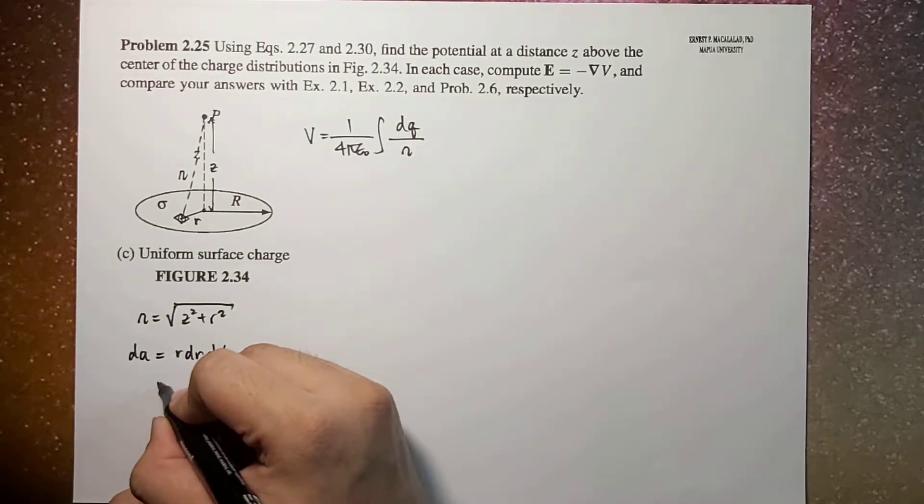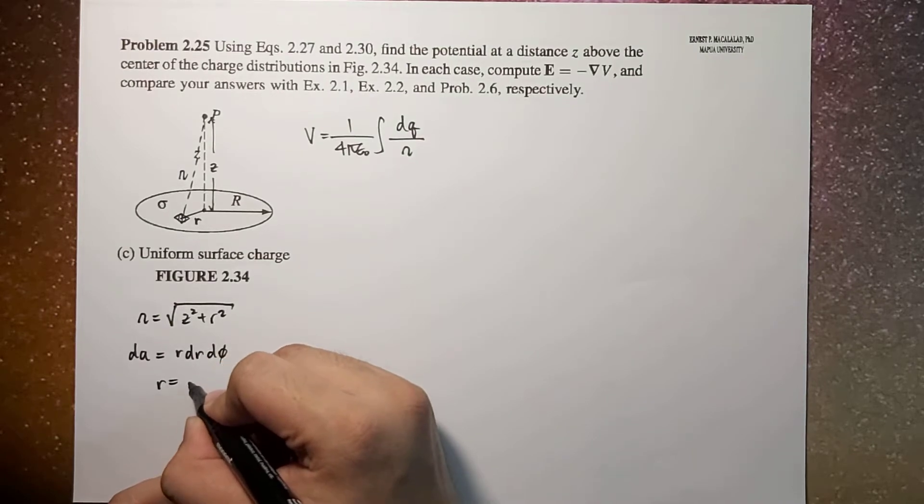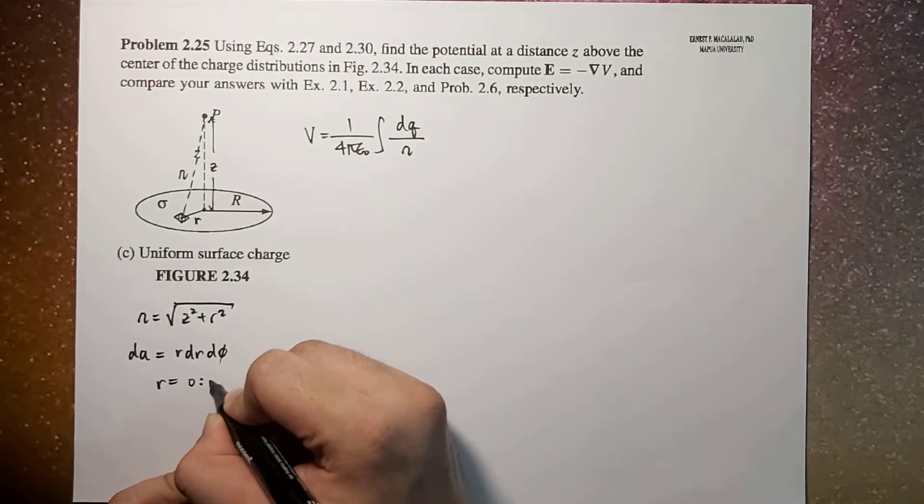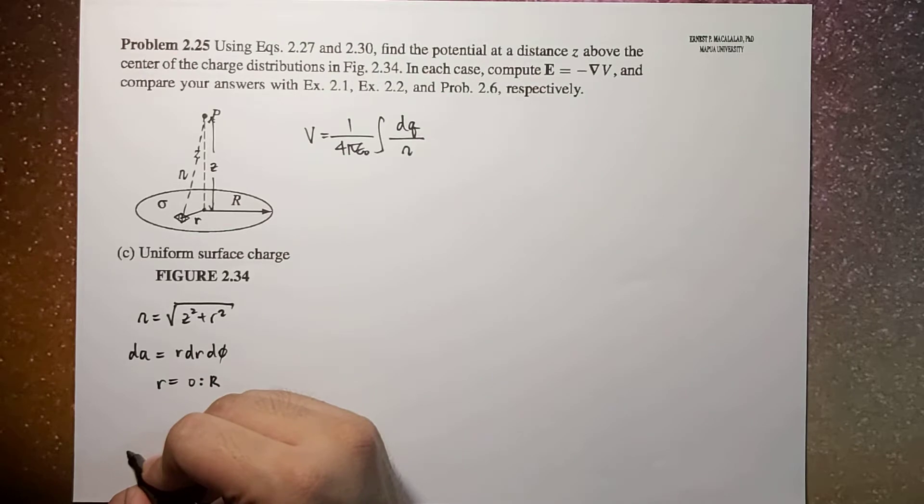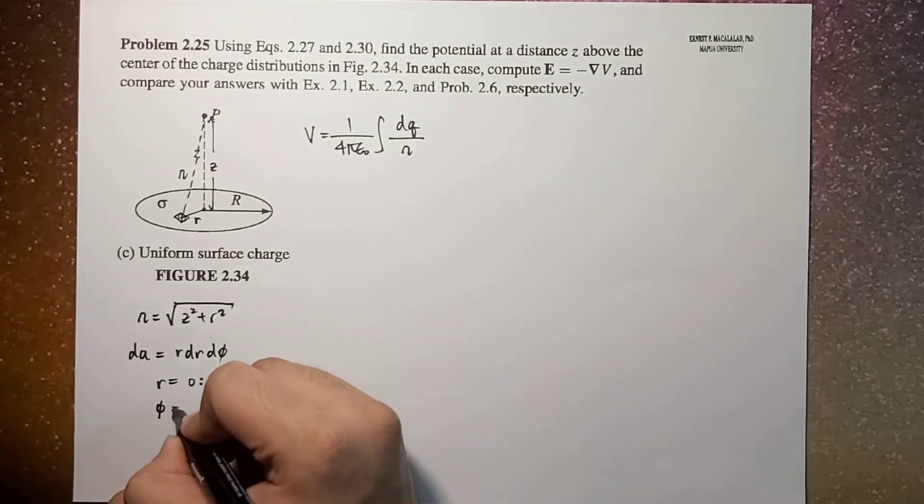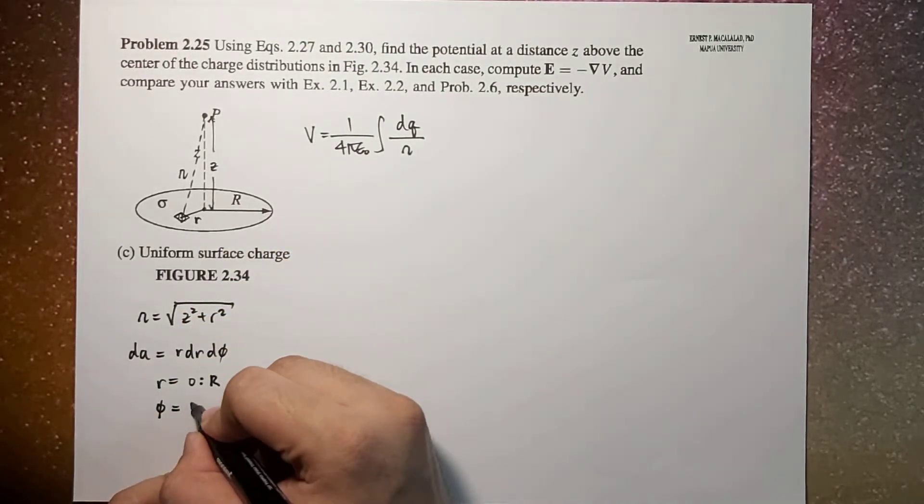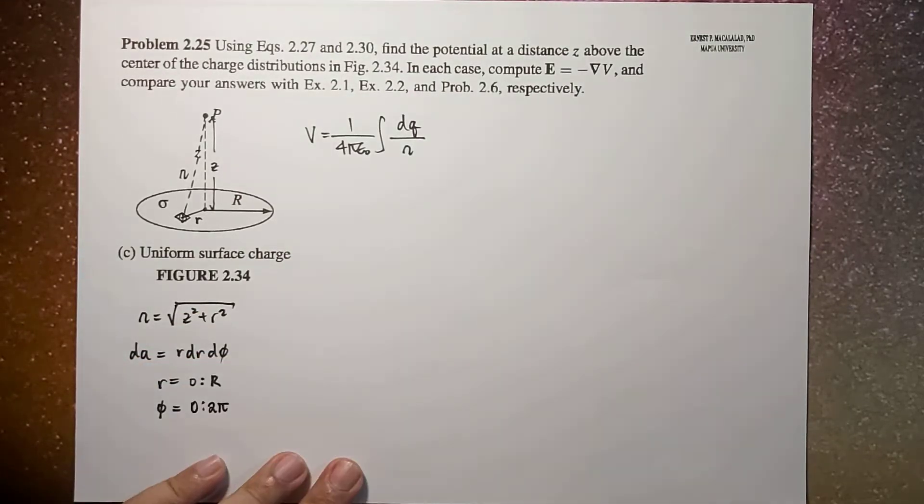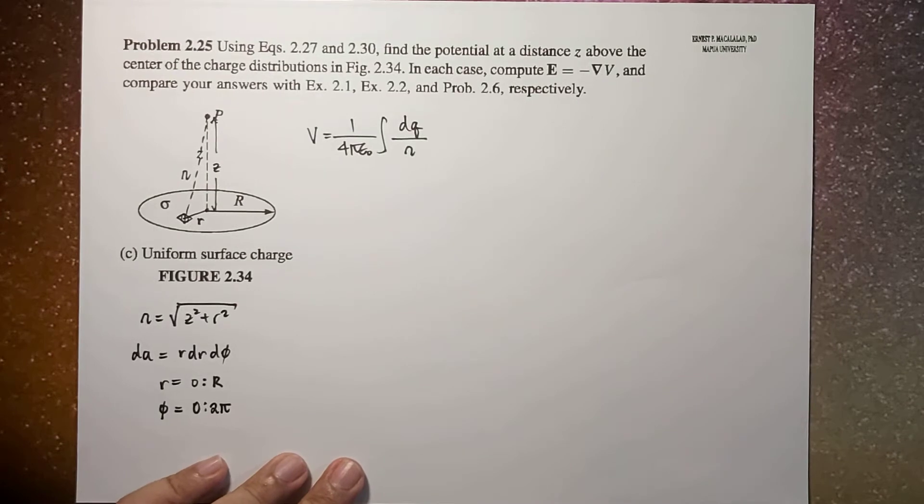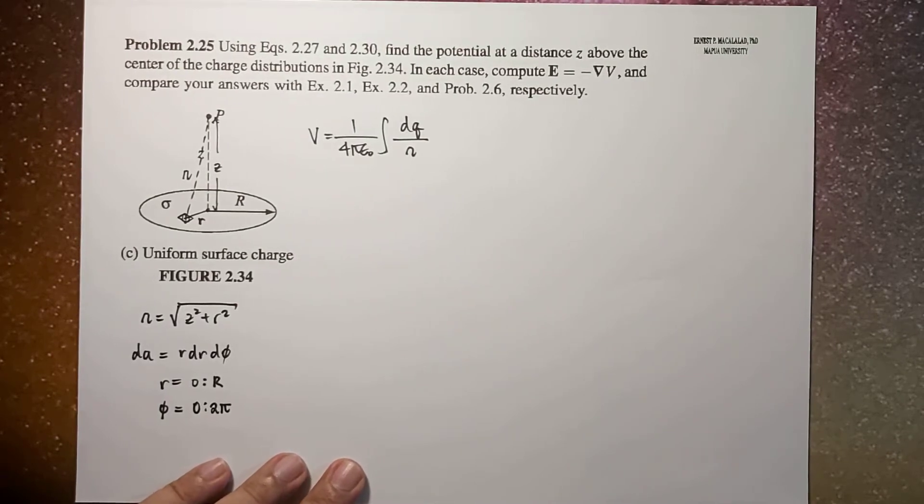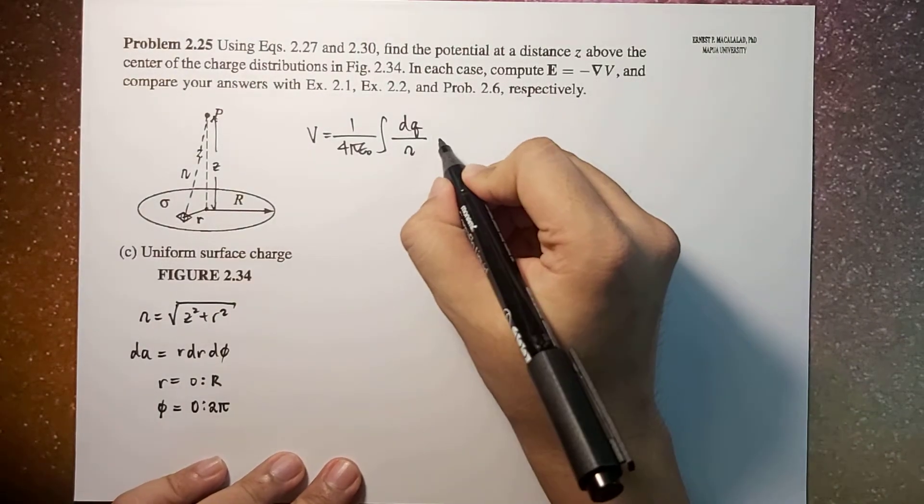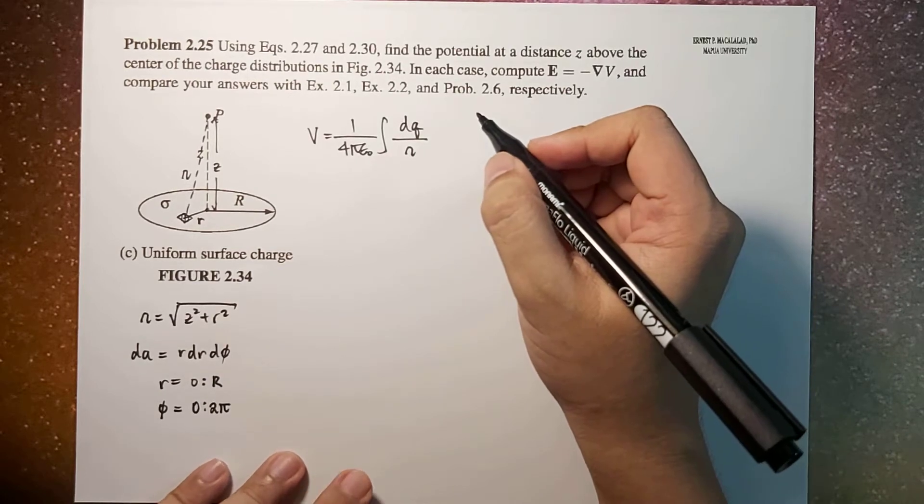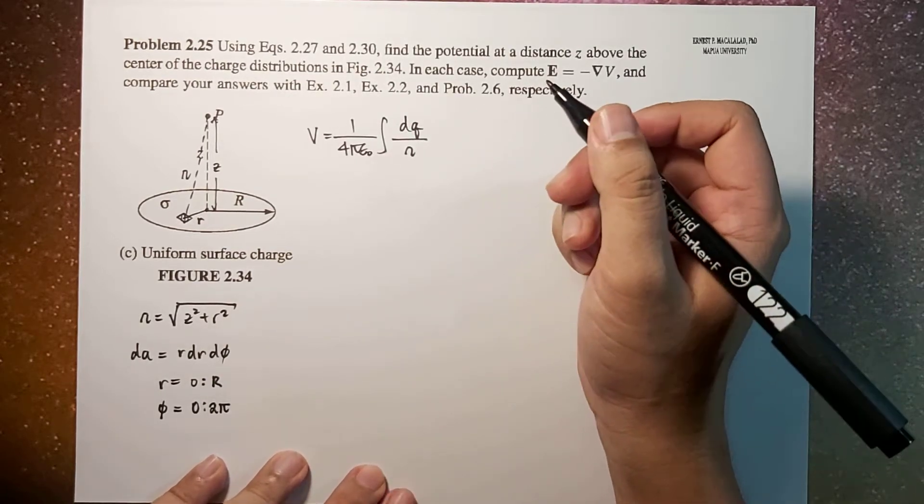r will range from 0 to capital R and phi will range from 0 to 2π. This is the setup. Because this is a surface charge configuration, which is a surface charge density times dA.